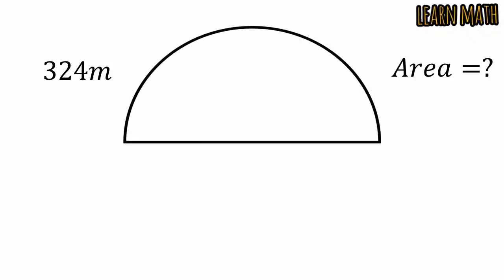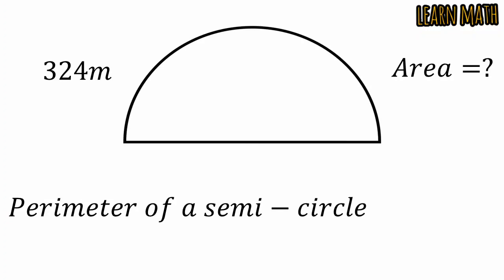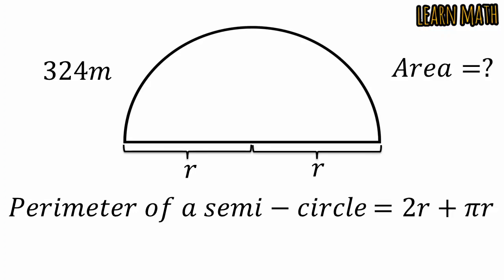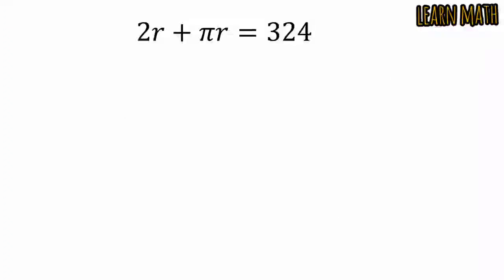A man walks 324 meters around his semi-circular garden — we have to find the area. To find the area we need to find r. We know that the perimeter of the semicircle is equal to r plus r plus half of 2πr, which simplifies to 2r plus πr. According to the question, 2r plus πr is equal to 324.